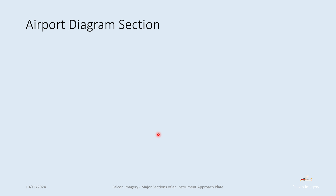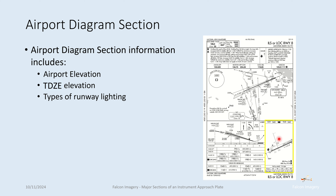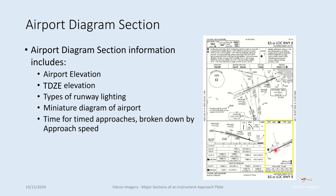The last section is the airport diagram, located on the far right. It includes the airport elevation, touchdown zone elevation, types of runway lighting available, and a miniature diagram of the airport and terminal so you know where to taxi to the FBO or similar. It also provides a timing table showing how many minutes it takes from the final approach fix to the missed approach point, based on your approach speed.